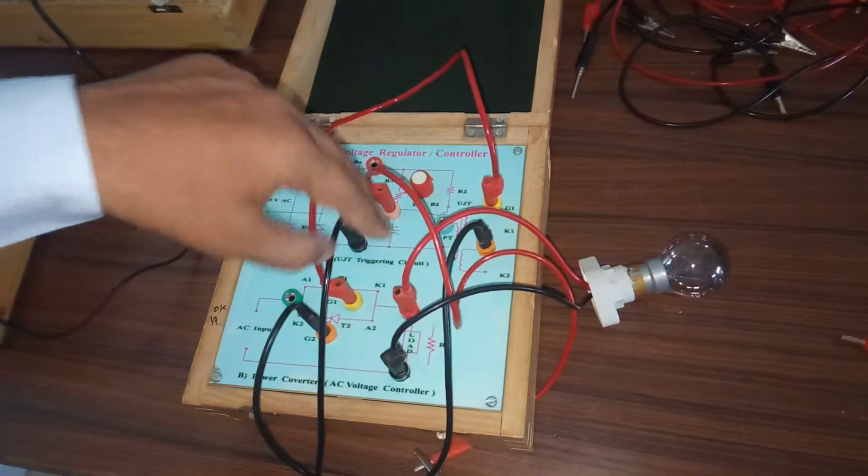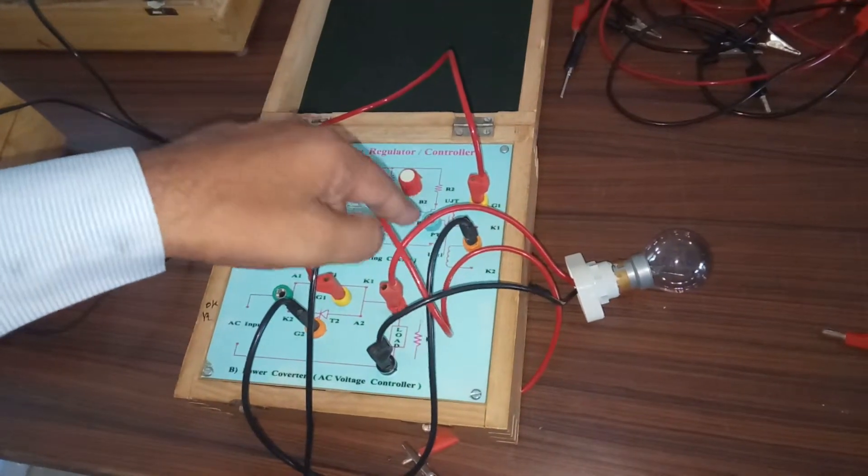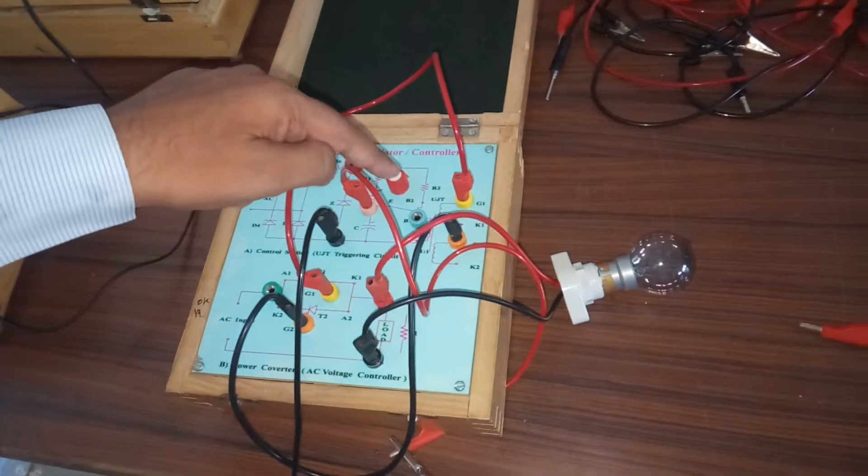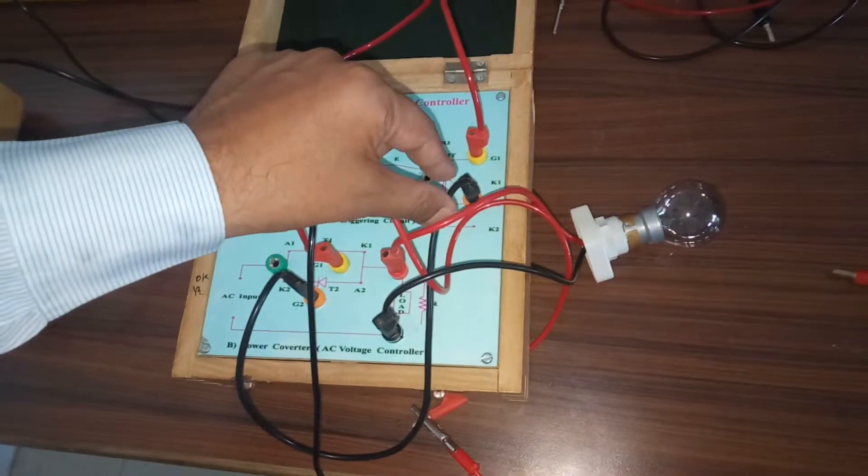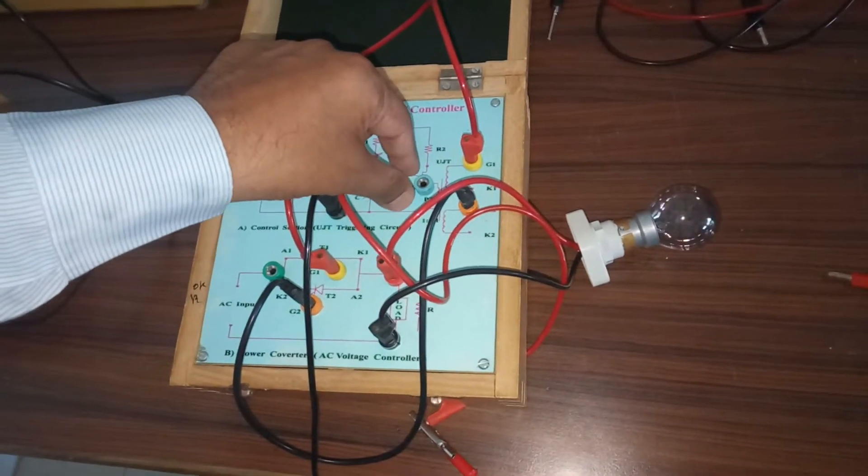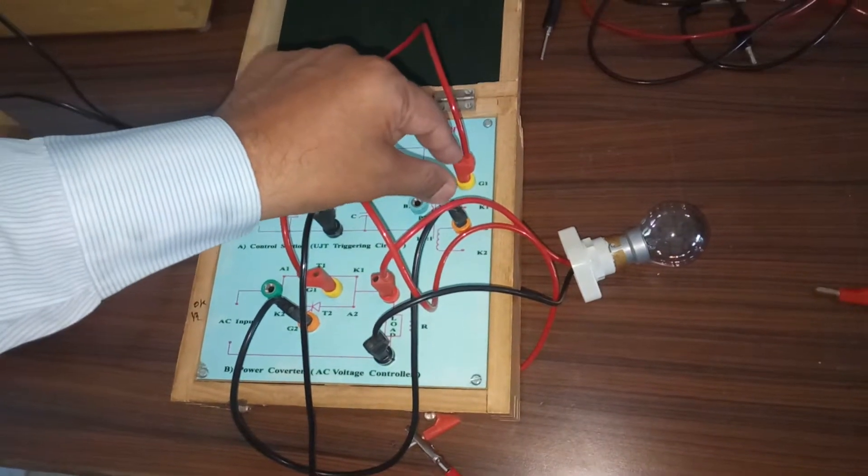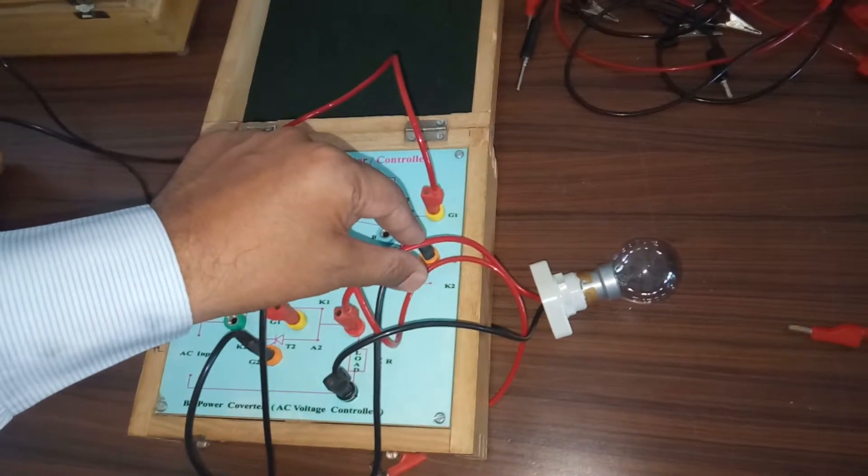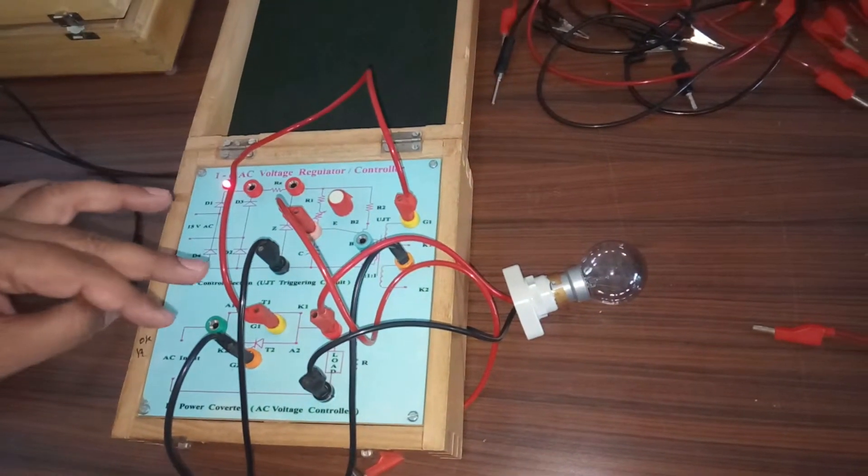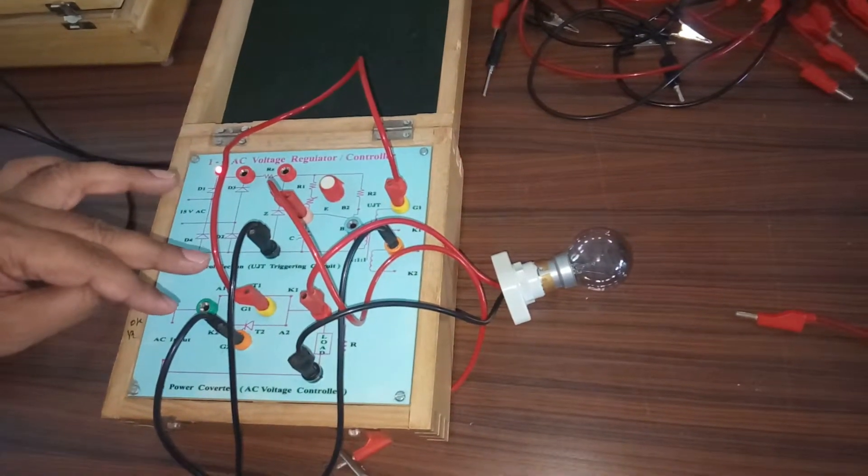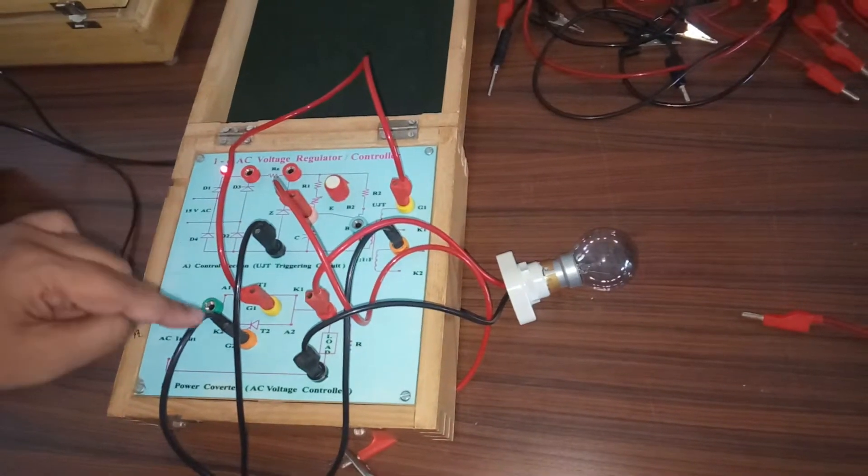These trigger pulses, we have used a pulse transformer of the rating 1 is to 1 is to 1. That is, it is having one primary and two secondaries. So the same voltage waveform will be available across this secondary as well as this secondary. Now these two secondaries, we have connected to the gate and cathode of two SCRs which are connected back to back.